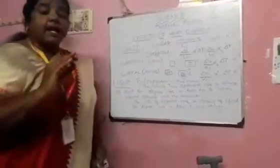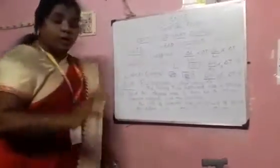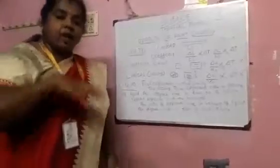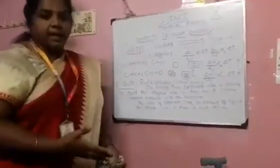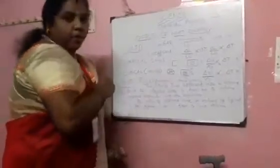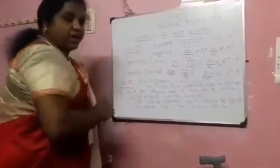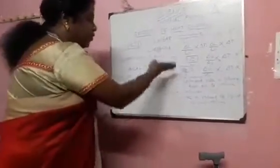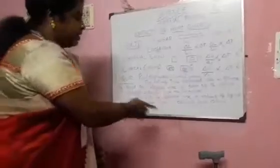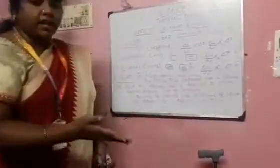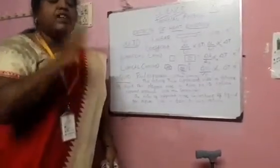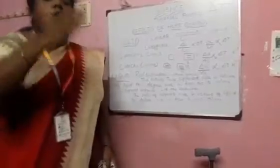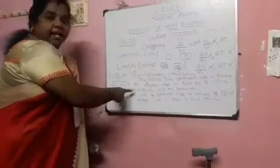Apparent expansion is with the container. Without a container, we cannot measure liquid — liquid is always kept in some container. So apparent expansion considers both the container and the liquid expanding when temperature is increased. But we only note how the volume of liquid has increased — that is called apparent expansion.